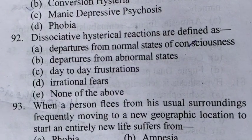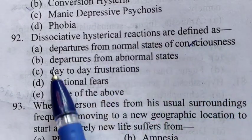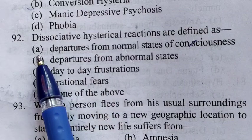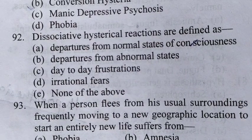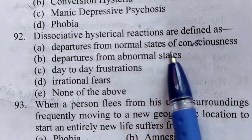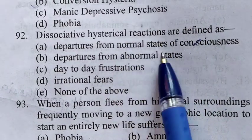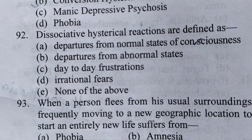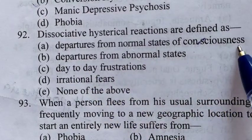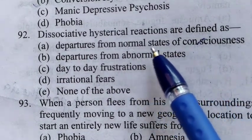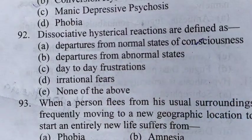92nd question: Dissociative hysterical reactions are defined as — jo dissociative hysterical reactions hain, unko kis tarike se aap define karenge. 92 ka answer hai A: Departures from normal state of consciousness — ki jo chetna ki saamaanya avastha hai, usse uske star mein parivartan, badal jaana. Alag alag states hoti hain. Is ki definition psychological aspect se bhi abhi properly nahi di gayi hai — kyunki dissociative hysterical reaction ki jo definition hai, woh depend karegi normal state kya hai. Normal is not normal when it comes to definitions. Toh ek swasth vyakti ki jo chetna ka sthar hota hai, usmein jo parivartan hota hai, wahi dissociative hysterical reaction hota hai.